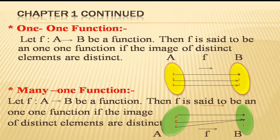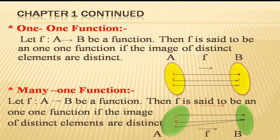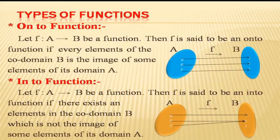The next one is the many-one function. Many-one means many go to one. If we find more than one element in the domain whose images are the same, we call this function a many-one function. In the second diagram, x is the image of a, but y is the image of both b and c — the image of b is y and the image of c is also y. So this is an example of a many-one function, meaning it is not a one-one function.